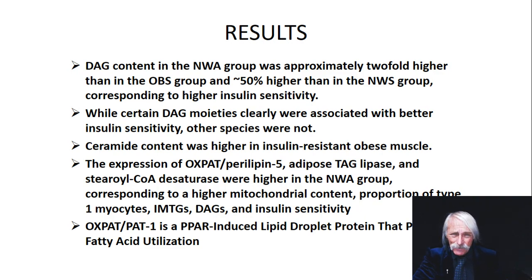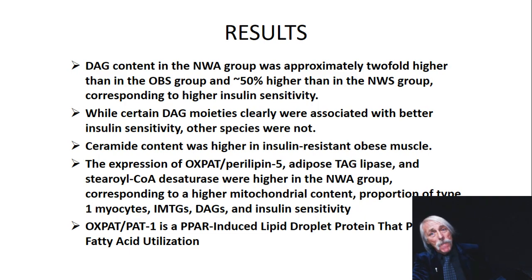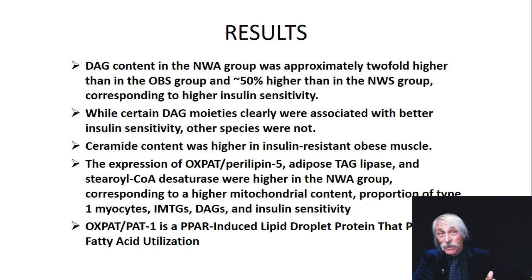There are certain DAG moieties — they're not all the same. It depends on what fatty acids are associated: saturated, monounsaturated, or polyunsaturated. Omega-3, omega-6, even omega-9 all make a big effect on DAG signaling activity through the PKC pathway. Once you peel off those fatty acids, they do different things — for example, they can make prostaglandins if they're polyunsaturated fatty acids.